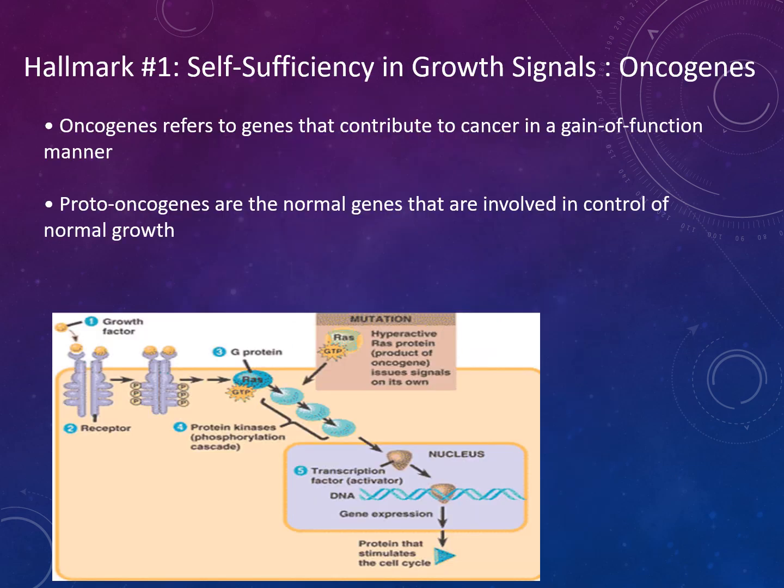Hallmark number one is self-sufficiency in growth signals. This was originally a genetic term to describe any gene capable of causing cancer, which later became known as tumour suppressors — loss of function genes that can cause cancer. However, oncogenes refers to genes that contribute to cancer in a gain-of-function manner. Proto-oncogenes are normal genes involved in control of normal growth. Examples of oncogenes include RAS.